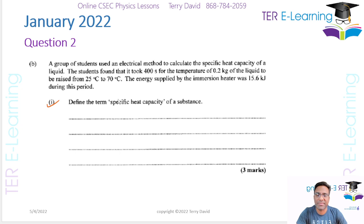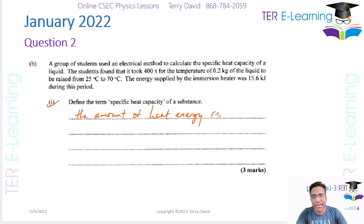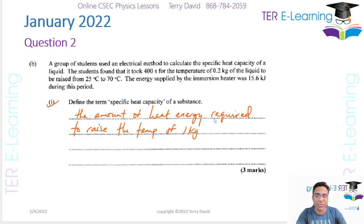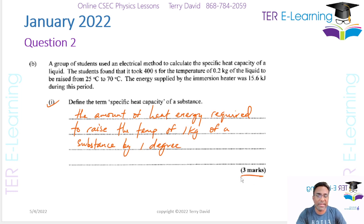First part: define the term specific heat capacity. This is the amount of heat energy required to raise the temperature of one kilogram — or unit mass — of a substance by one degree. That one degree can be one degree Kelvin or one degree Celsius. That's the definition for three marks.